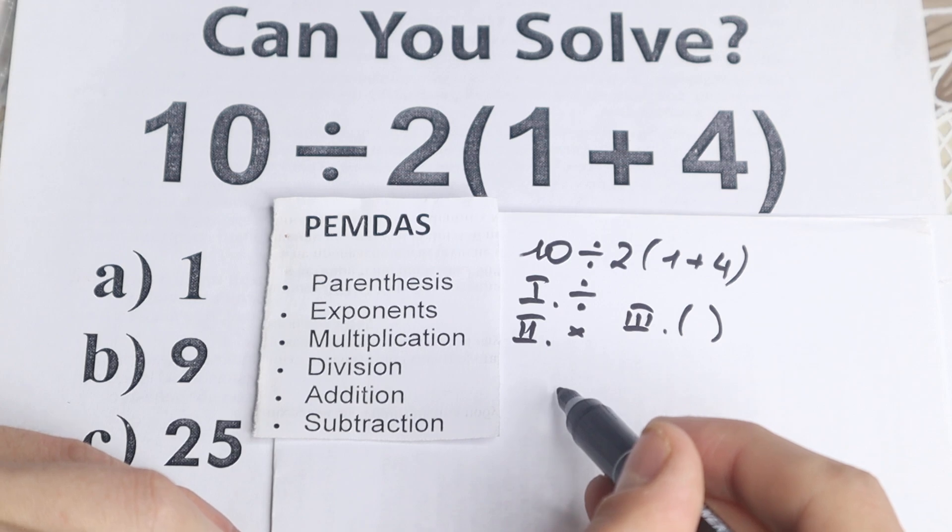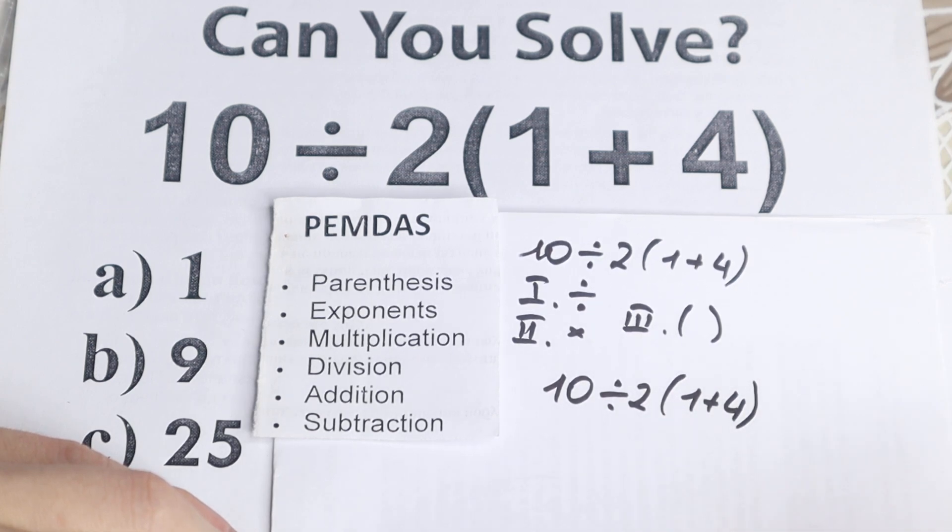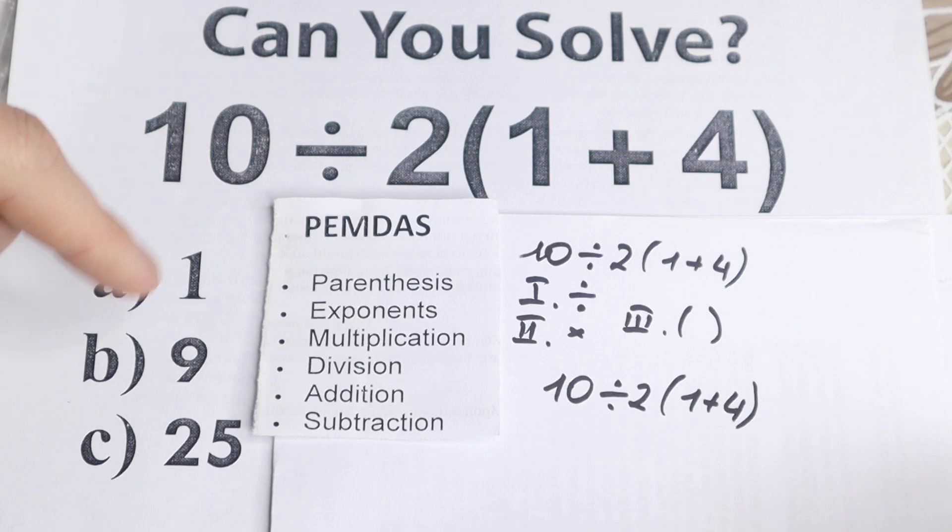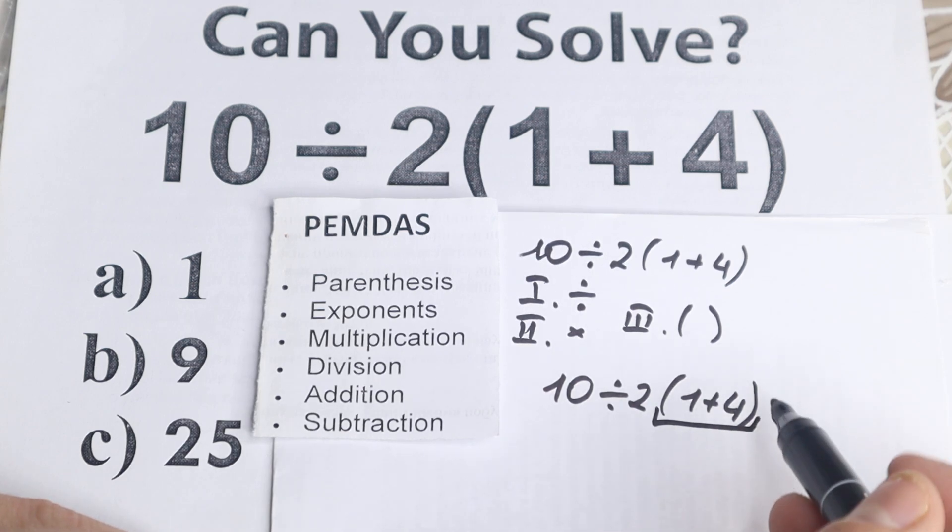So according to PEMDAS order I just wanted to rewrite this problem. So 10 divided by 2 and in parentheses 1 plus 4. According to PEMDAS order we need to start from the top to the bottom. In the first step we have parentheses, so we need to start from these parentheses. So 1 plus 4 equal to 5.